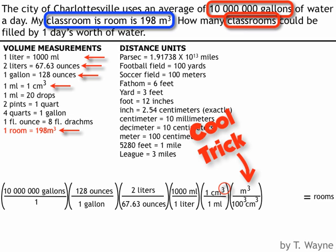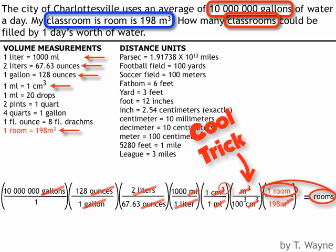Remember, all you're doing is matching up units, top and bottom, as you go through your dimensional analysis. My final conversion — now I have meters cubed — is to go to rooms, so I'm going to use the conversion factor given: one room is equal to 198 cubic meters. One final check: gallons on top, gallons on bottom; ounces on top, ounces on bottom; liters on top, liters on bottom; milliliters on top, milliliters on bottom; centimeters cubed on top — that's where I did the trick to get centimeters cubed on the bottom — leaving meters cubed on top. Then the last conversion puts meters cubed on the bottom, leaving rooms on top, which is what I want.